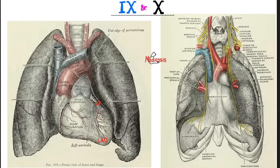The vagus nerve plays a role in the baroreceptor reflex together with the glossopharyngeal. It also plays a role in the Bainbridge reflex, which is the topic of today's video.